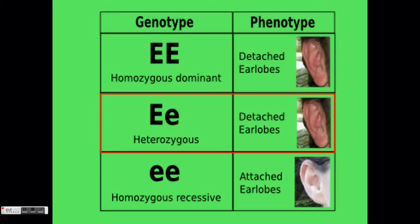Now, if a person receives a recessive allele from mom and a recessive allele from dad, they will have a homozygous recessive genotype. Since there is no dominant allele present, the person can have the recessive phenotype, which is attached earlobes.